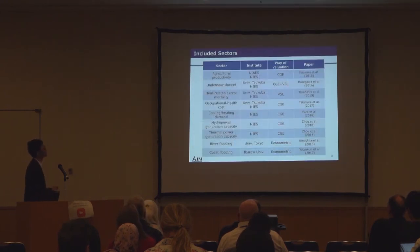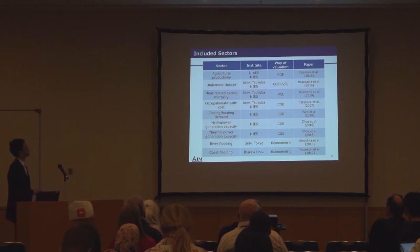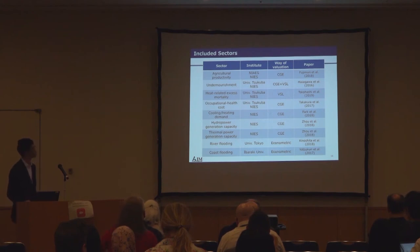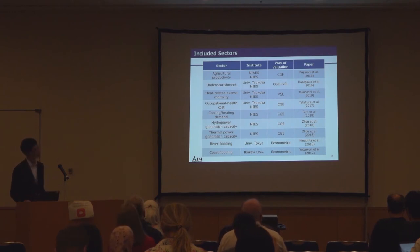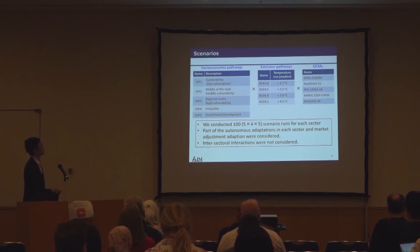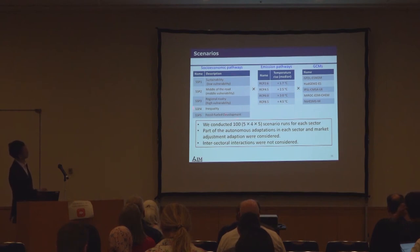Here is the list of sector coverage and the literature list. From the top: agricultural productivity and land-use adjustment, heat-related excess mortality, and so on — we covered nine sectors in this study, which is almost the highest number in this field. Individual sector analyses are documented in each paper. As for the scenario framework, we considered multi-socioeconomic dimensions, radiative forcing levels, and GCMs. In total, we did 100 scenario runs — five multiplied by four multiplied by five — so it was a huge work. It was a big project in Japan, and we incorporated a large number of people.